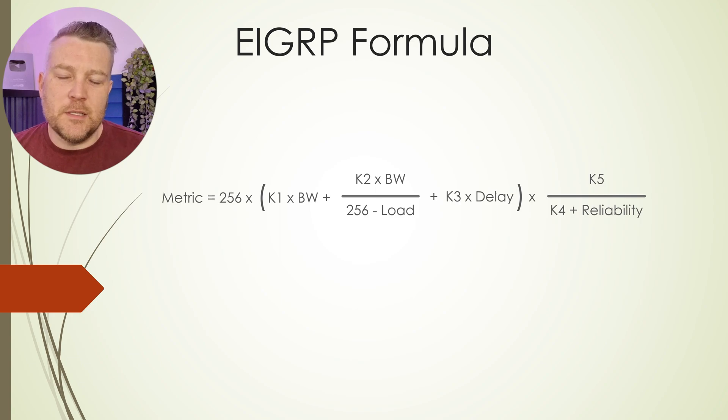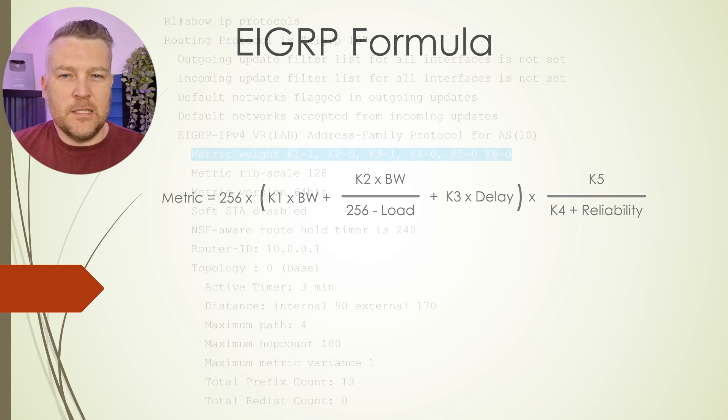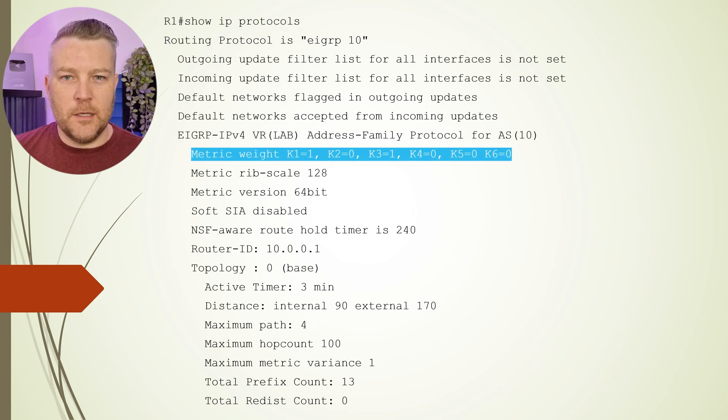Now there's a common misconception that these K values contain the bandwidth or they contain the delay or so on. However, let's just dispel this misconception by running the command show IP protocols. Now we see by default here that each of these values is set to either zero or one.